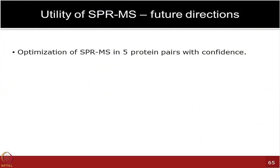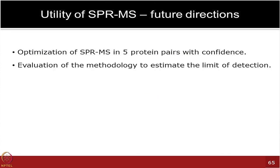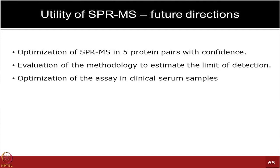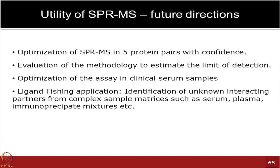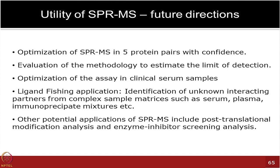So far, we have tested five protein pairs using the SPR-MS approach with growing confidence. We are evaluating the technology to determine the limit of detection and its best uses, including for clinical serum samples — for example, a known protein of interest where you want to see what other interactors it binds. Ligand-fishing applications can be built on this approach, and GE application scientists are also working with it. Applications include PTM analysis and enzyme inhibitor screening; the key is minimizing run cycles while reaching the lowest mass spec detection limit.